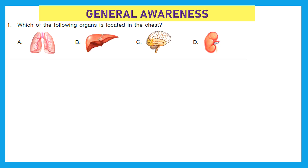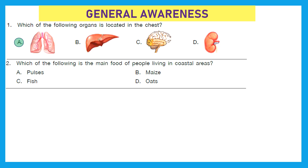The first section is General Awareness. Question 1: Which of the following organs is located in the chest? A) Lungs, B) Liver, C) Brain, D) Kidney. The right answer is A — Lungs. Question 2: Which of the following is the main food of people living in coastal areas? Is it pulses, maize, fish, or oats?